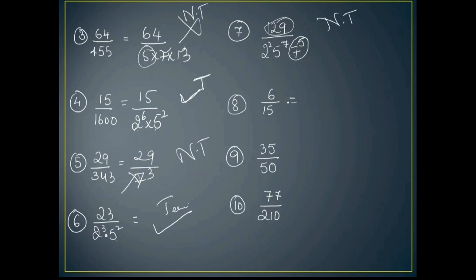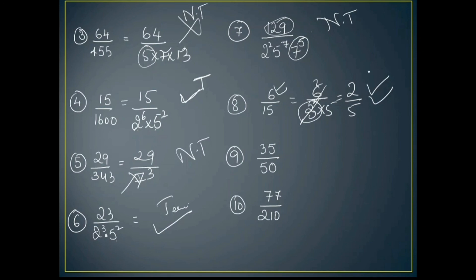Important note: Always simplify first and check if any unwanted prime factors cancel out. For example, 6/15 = 2/(3×5) — after simplification, 3 cancels out — leaving only 5, so it is terminating. Always check in simplest form whether the denominator has only 2s and 5s.